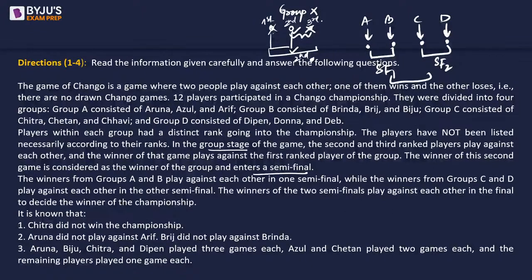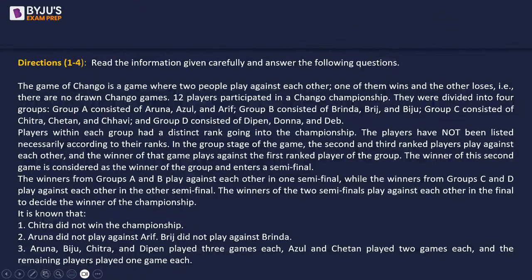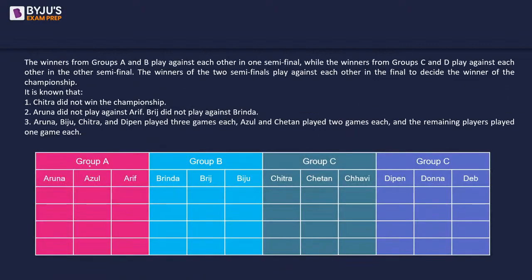The winners of the two semi-finals play against each other in the finals to decide the championship winner. It is known that Chitra did not win the championship, Aruna did not play against Arif, Bridge did not play against Brinda, and so on. This is a classic scenario — not exactly complete round robin, because not every player gets to play against every other player exactly once.